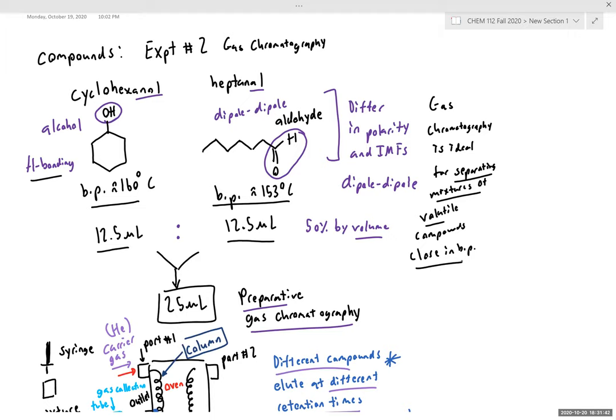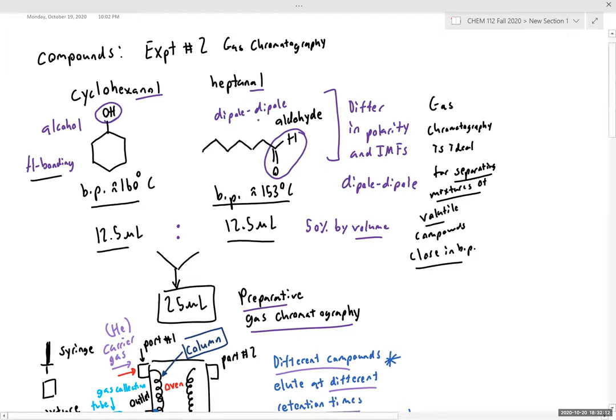For the first part of gas chromatography, we're going to look at the separation of cyclohexanol, which is an alcohol, and heptanol, which is an aldehyde. These two compounds have a very small difference in boiling point, so you would really not want to try to separate them via distillation. Looking at these two structures, what do we notice is different? Do they have the same or different intermolecular forces?